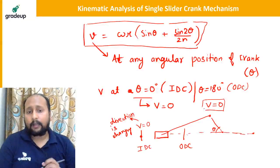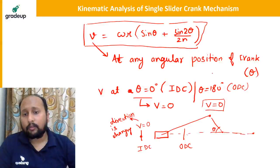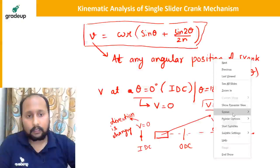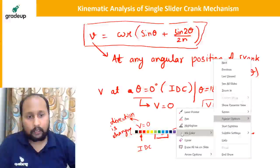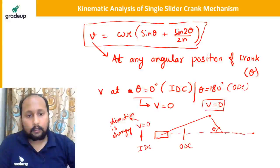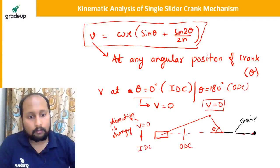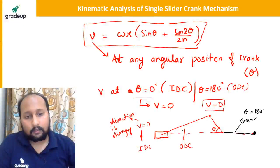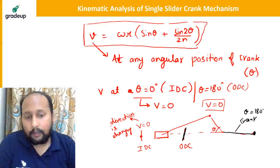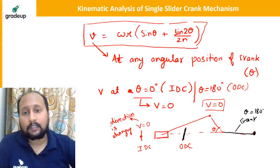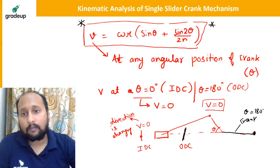This is very important. At theta = 180°, this is the position of the outer dead center, and the slider is at the far end. The expression v = rω(sinθ + sin2θ/2n) is very important as it gives the velocity of the slider at any angular position.